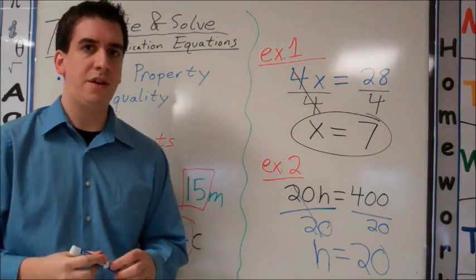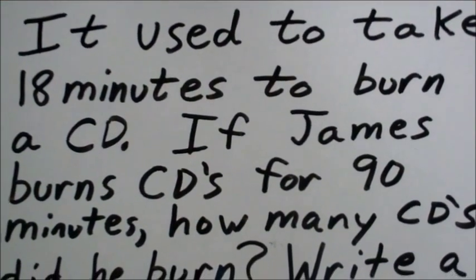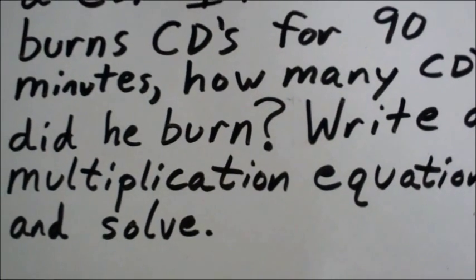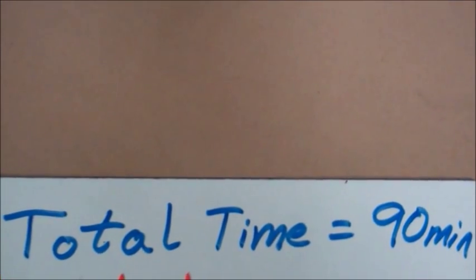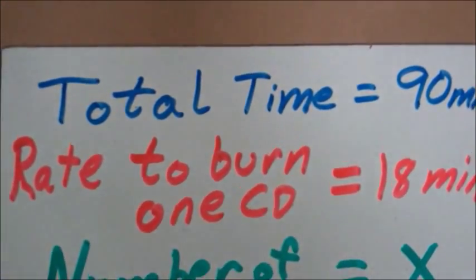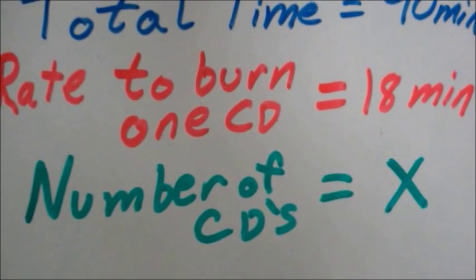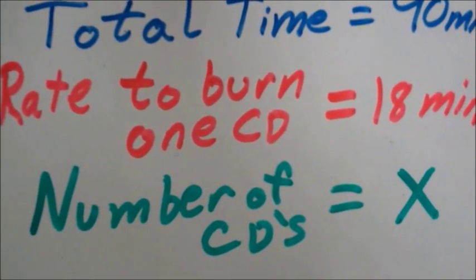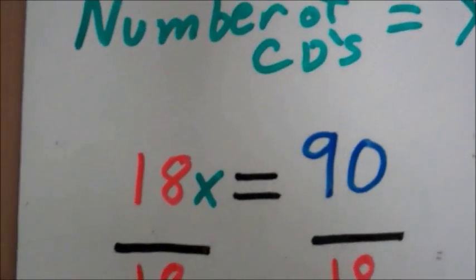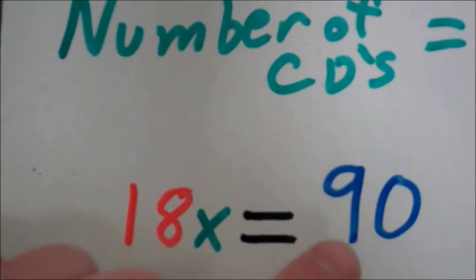Let's take a look at a word problem. It used to take 18 minutes to burn a CD. If James burns CDs for 90 minutes, how many CDs did he burn? Write a multiplication equation and solve. First, we'll look at the important information. The total time that he spent burning CDs was 90 minutes. It takes 18 minutes to burn one CD. The number of CDs that he burned we don't know, so we need a variable. We can use x. If you want to use c for CDs, you're welcome to do that. And let's set up our equation. 18 times the number of CDs is 90 minutes.